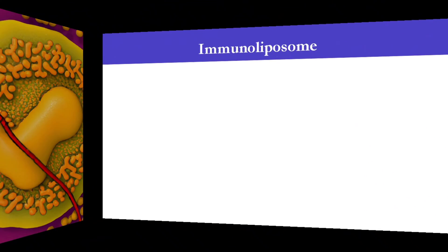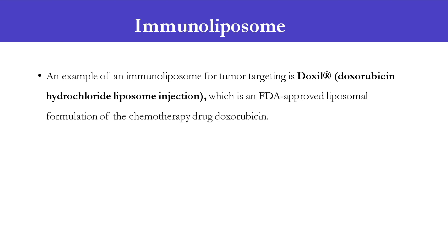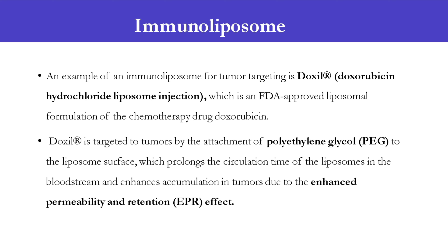An example of an immunoliposome for tumor targeting is Doxyl — doxorubicin hydrochloride liposome injection — which is an FDA-approved liposomal formulation of the chemotherapy drug doxorubicin. The drug Doxyl is targeted to tumors by the attachment of polyethylene glycol (PEG) to the liposome surface, which prolongs the circulation time of the liposomes in the bloodstream and enhances accumulation in tumors due to the enhanced permeability and retention (EPR) effect.